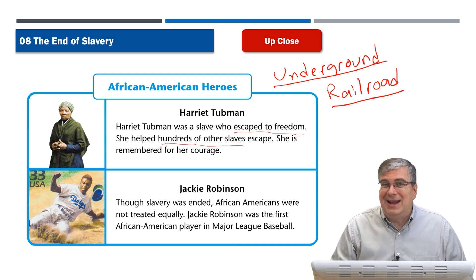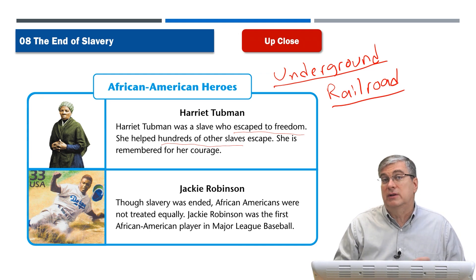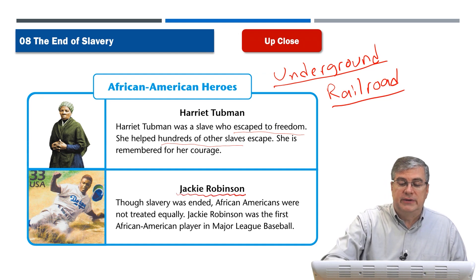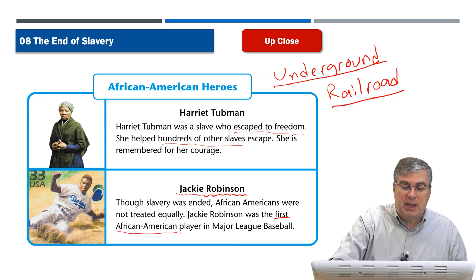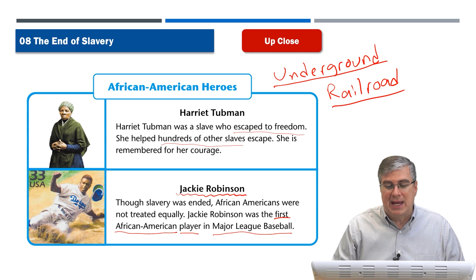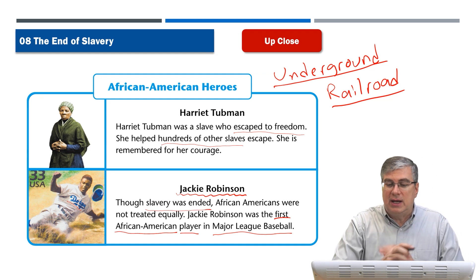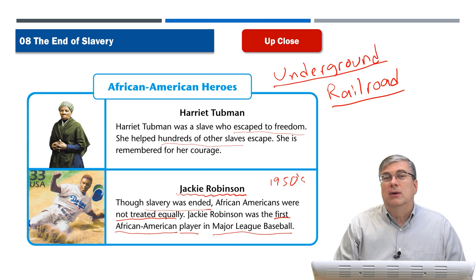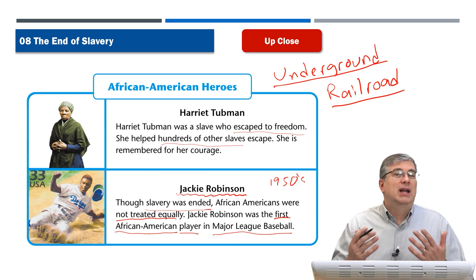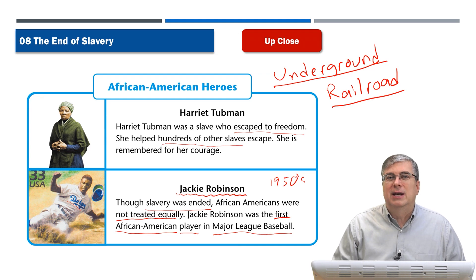Even though slavery ended, a hundred years later there were still problems in America, especially with race. There's another famous person, Jackie Robinson, who in the 1950s became the first African American player in Major League Baseball — the MLB. He played for the Dodgers, as you can see on his uniform. Although slavery was ended, in the 1950s African Americans were not treated equally. There was discrimination — they were not treated as equal persons.